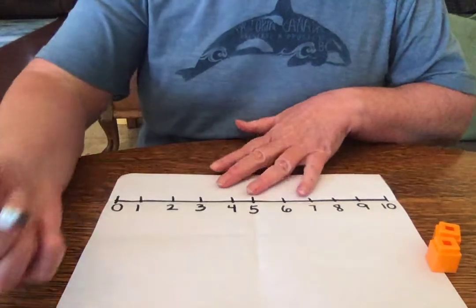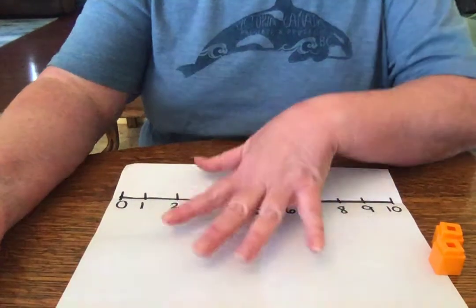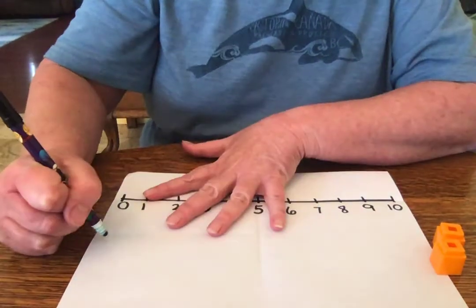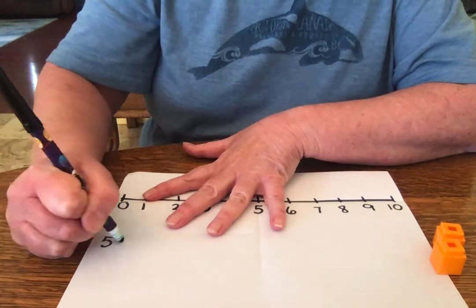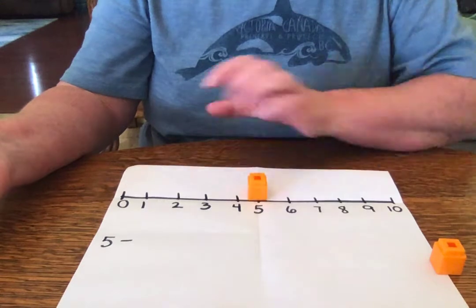Now, subtraction, we always start with the biggest number. So let's start with, let's say we start with 5 here, okay? 5, right? So we're going to start on 5. I'm going to put my marker right there on 5.